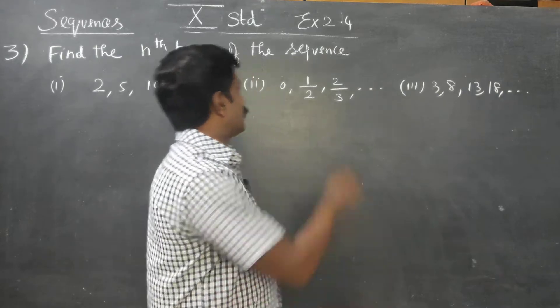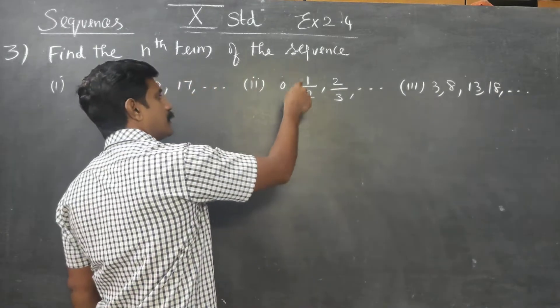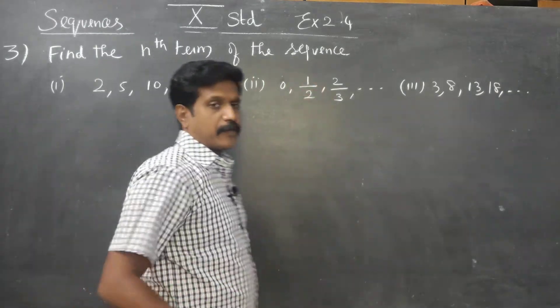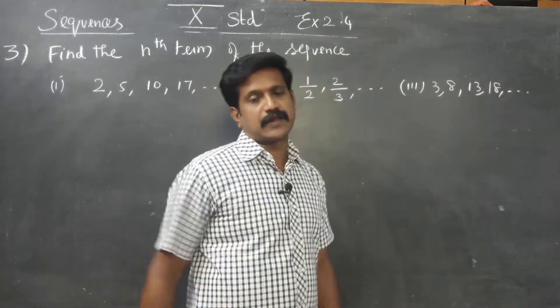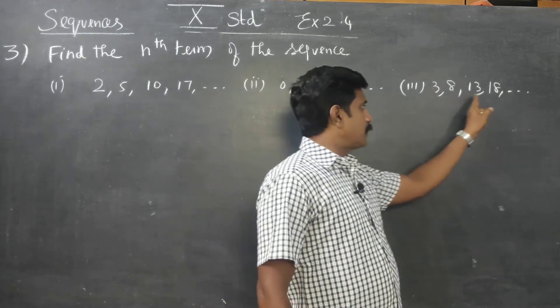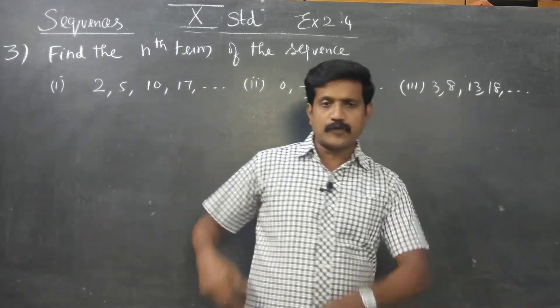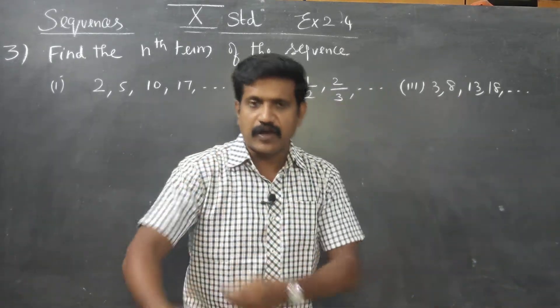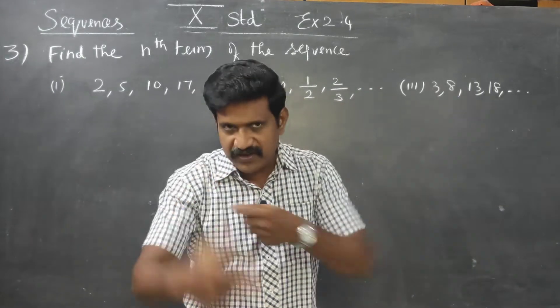You have to find a common formula — a common formula of the sequence. So using a common formula, you have to find the nth term or the formula for the sequence.